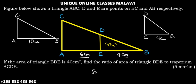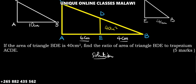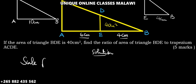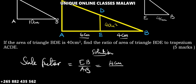We can now find the scale factor — the ratio of the bases. The scale factor is the base of the small triangle over the base of the bigger triangle, which is EB over AB: 4 centimeters over 10 centimeters. That simplifies to 2 over 5, so our scale factor is 2/5.